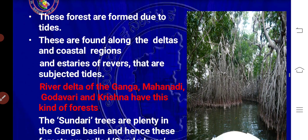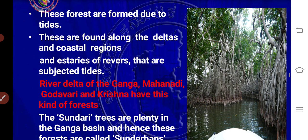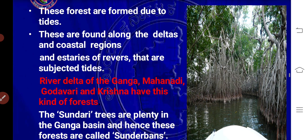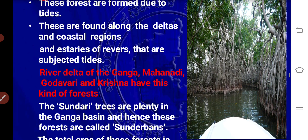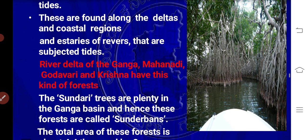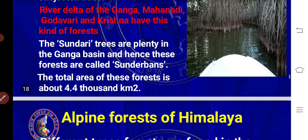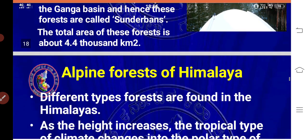Mangrove forests are formed due to the tidal action and are found along the deltas and coastal areas. These forests are a very interesting type of natural vegetation in India.